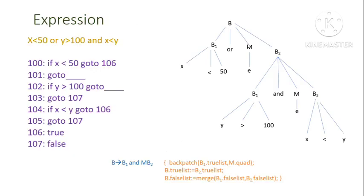We will take the expression: x < 50 OR y > 100 AND x < y. This is a short circuit logical operation. We will write three address code starting at address 100. At address 100: if x < 50 goto 106. Since this is an OR condition, if the first instruction x < 50 is true, the entire expression is true, so it goes to the true list at address 106.